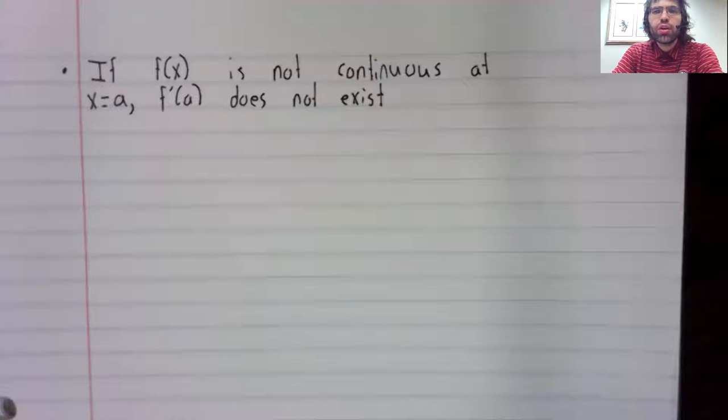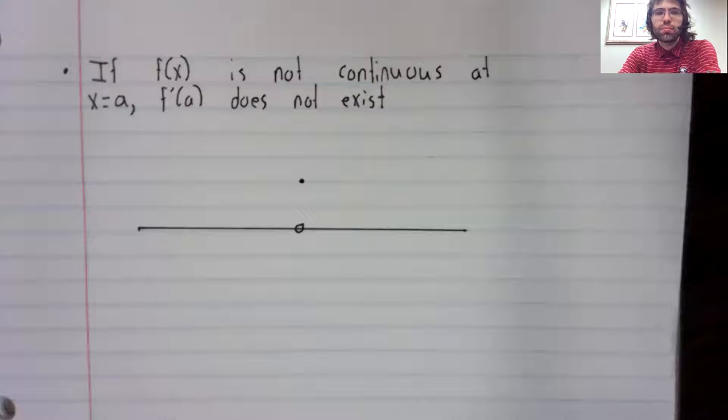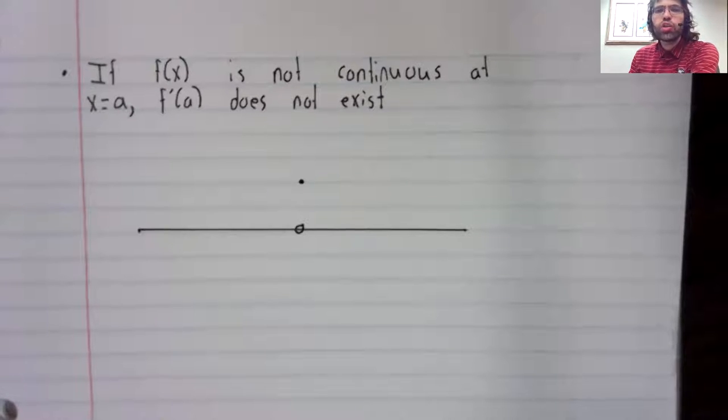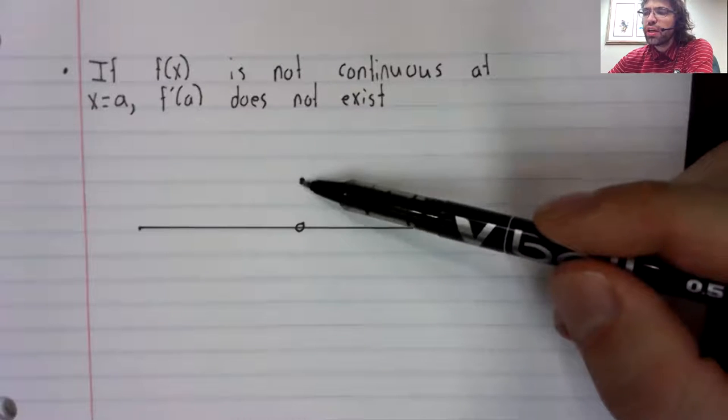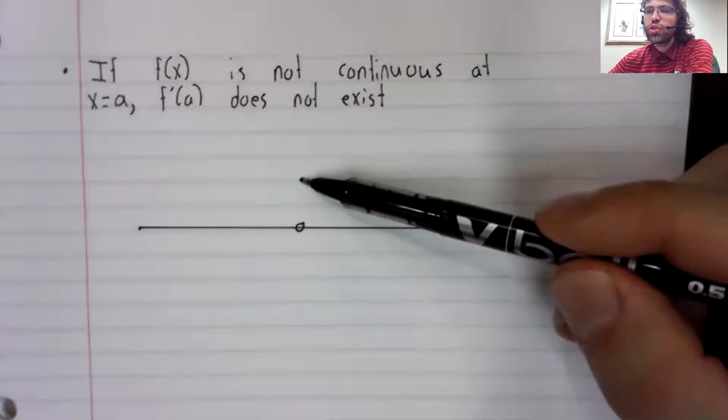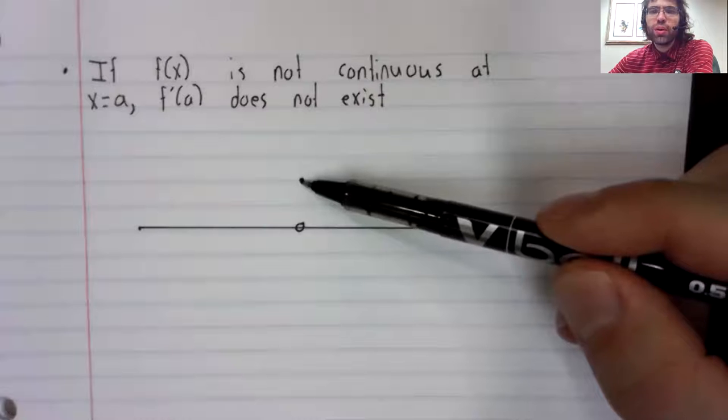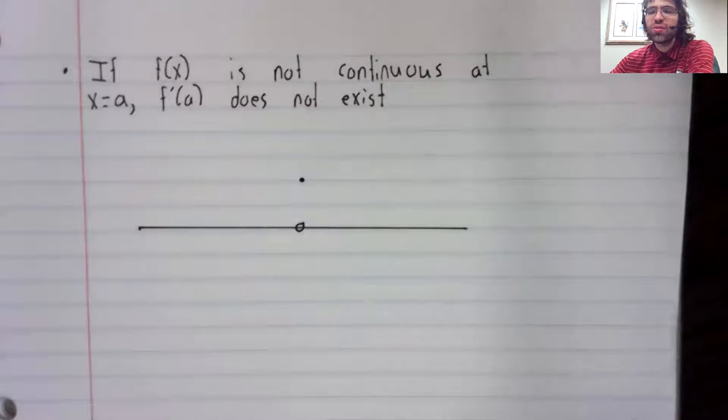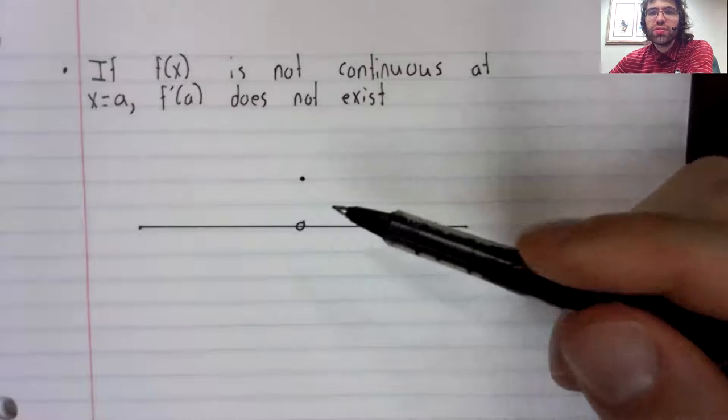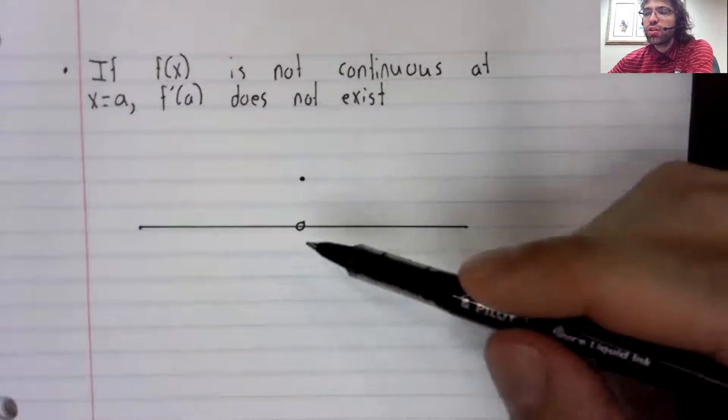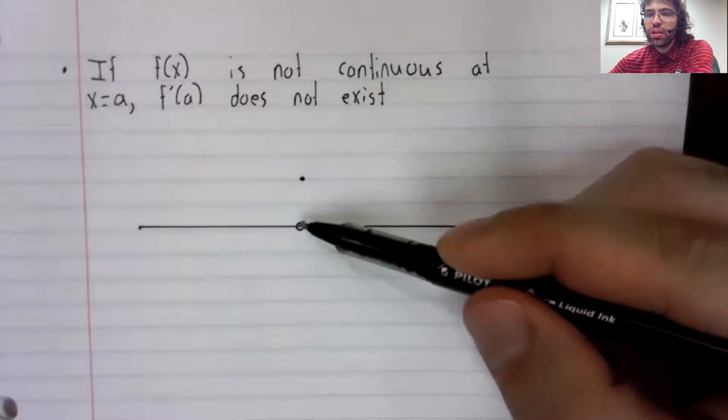Let's look at a quick example. Let's look at a function that's constant, except that it has this little jump here, just one point out of place. This function is not continuous here, and it's not differentiable here.